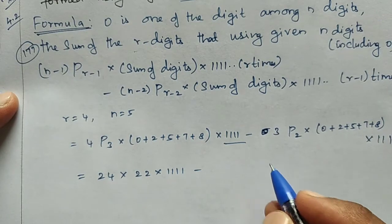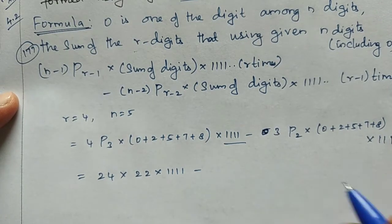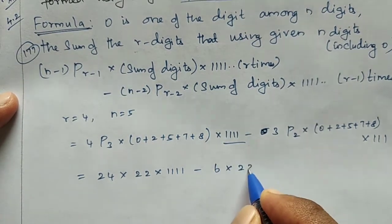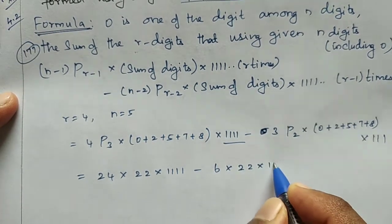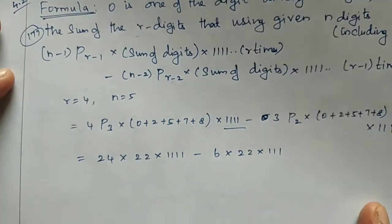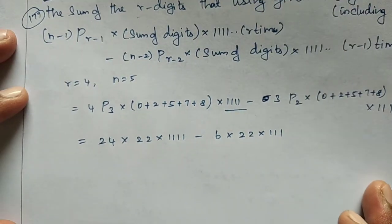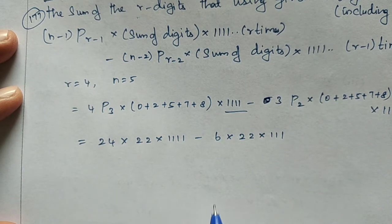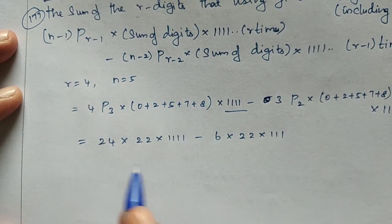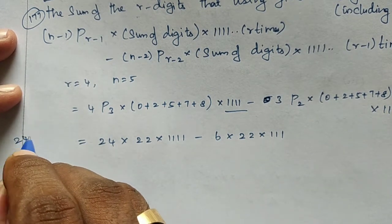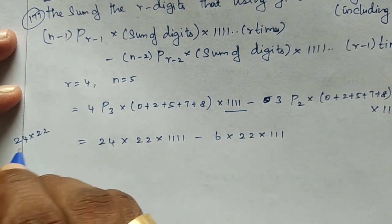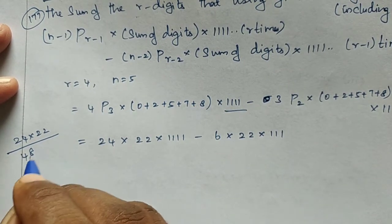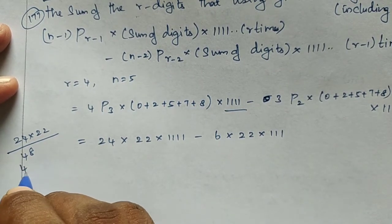For the second term: (n−2)P(r−2) = 3P2 = 6. So the second term is 6 × 22 × 111. Now performing the multiplication: 24 × 22 = 528.